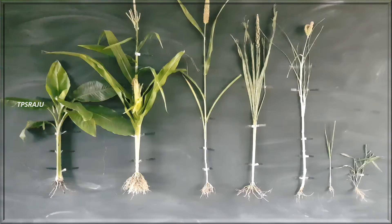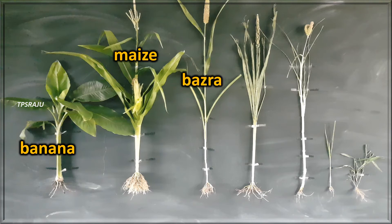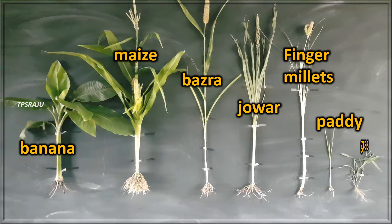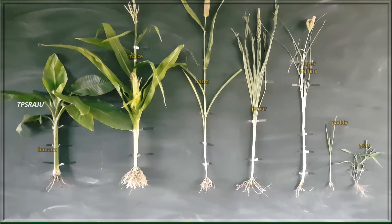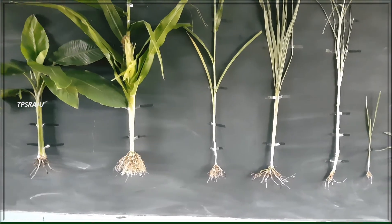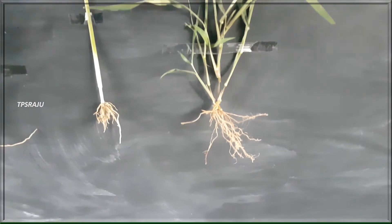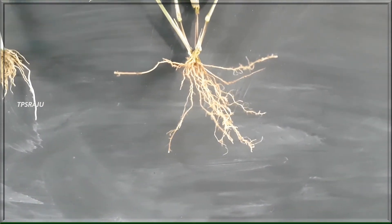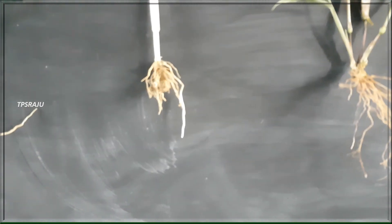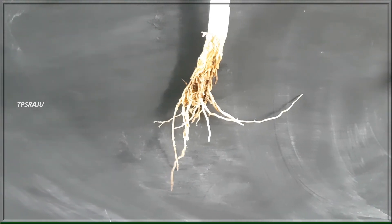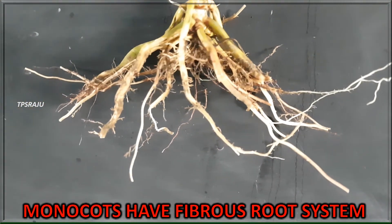Students, here I have collected some monocot plants such as banana, maize, bajra, jowar, finger millets, paddy and grass. Carefully observe and identify what type of root system they have. Fibrous root system. Yes, correct. All monocot plants have fibrous root system.